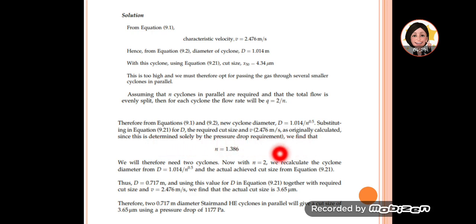We find that n equals 1.386. We can't have 1.386 cyclones, so we need at least 2 cyclones. With n equal to 2, we reverse calculate. We can calculate the cyclone diameter from this equation and get the actual achieved cut size for this diameter.